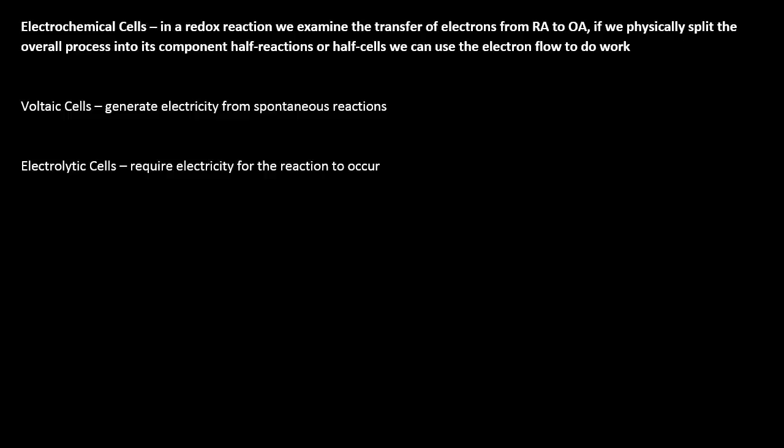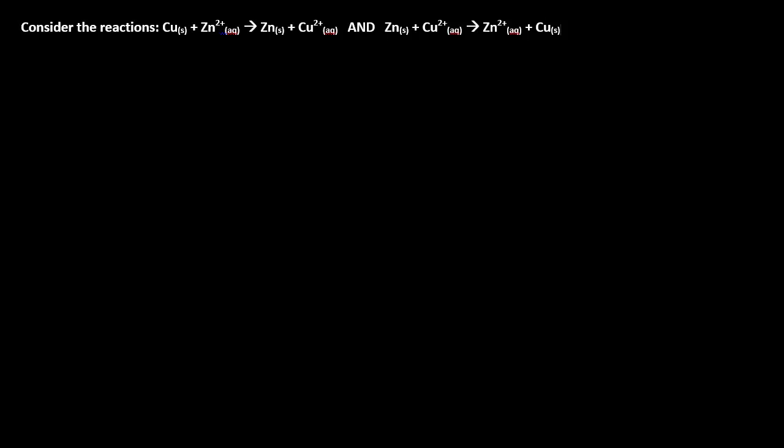You may want to pause the video and take these definitions down. We're going to look at electrochemical cells, which is where we use the transfer of electrons from reducing agent to oxidizing agent by physically splitting the reaction into two parts, which we call half cells.